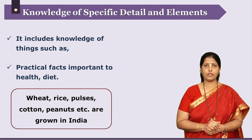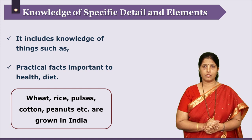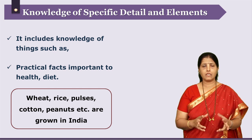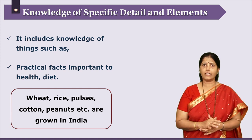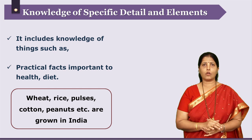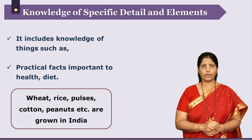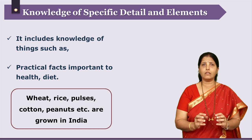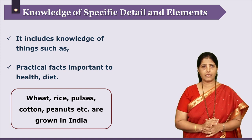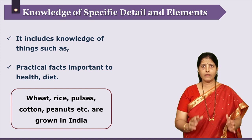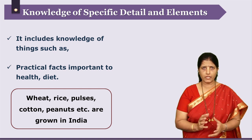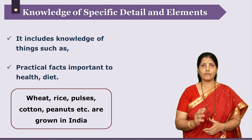Now let us take a look at knowledge of specific details and elements. Consider different crops grown in India — wheat, rice, maize, different kinds of pulses, etc. Now consider the information related to them: which parts of India these crops are grown in, what kind of earth is required, and so many details which are necessary for the learner to learn. These are not independent facts; they are connected to each other. When these facts get connected constituting a holistic, big structure of information, it is termed as knowledge of specific details and elements.